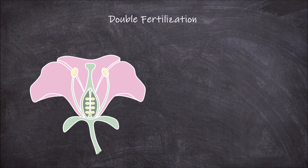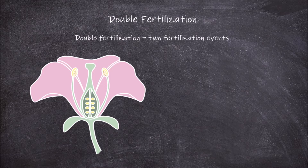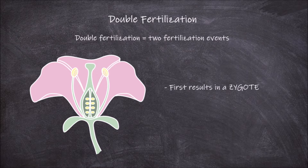Double fertilization is a process that occurs in angiosperms, also known as flowering plants, where there are two fertilization events. One of these, like in other plants, results in the zygote. The second results in the endosperm.